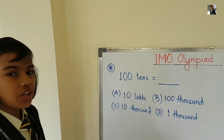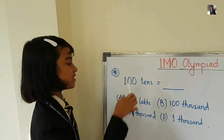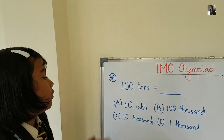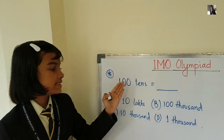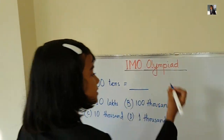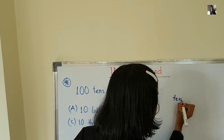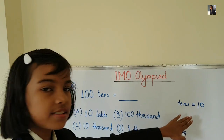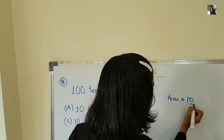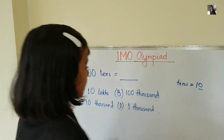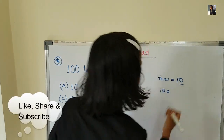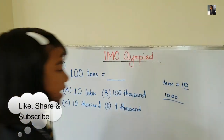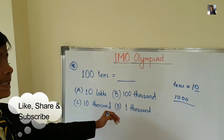Now we will solve a question from numbers. Hundreds tens means what? Tens means what — this one — how many zeros are there? There is only one zero. So hundreds tens means hundred, then this one zero will be there, which means one thousand.